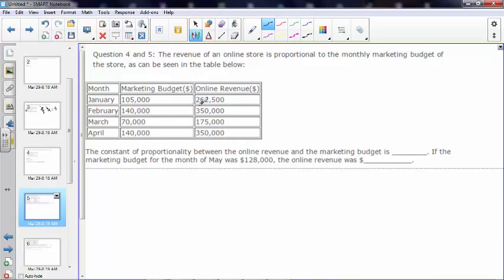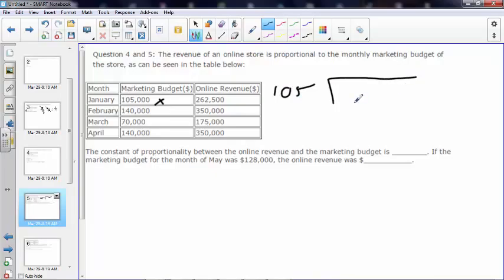If you read this, the revenue of an online store is proportional to the monthly marketing budget of the store as can be seen. So this times some number is going to give this. If we multiply this and 140,000 and 70,000 by this, whatever number we pick, it's always going to give us this answer.